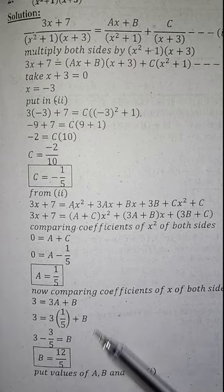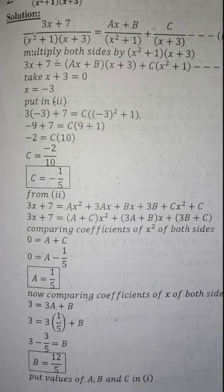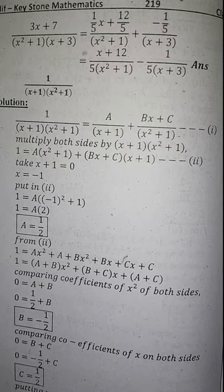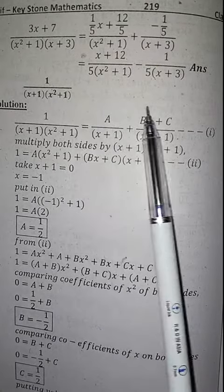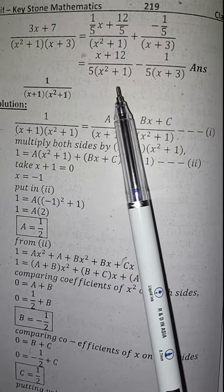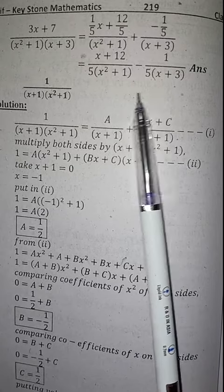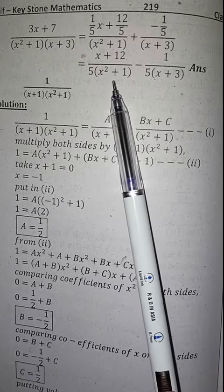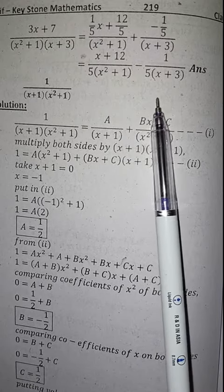Now put values of A, B and C which we have already found in equation 1. We get 3x plus 7 over x square plus 1 into x plus 3 is equal to 1 over 5 x plus 12 by 5 over x square plus 1 plus minus 1 over 5 over x plus 3, which is equal to x plus 12 over 5 x square plus 1 minus 1 over 5 into x plus 3.